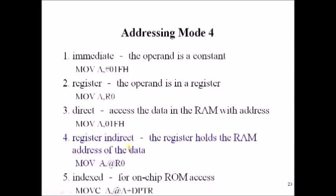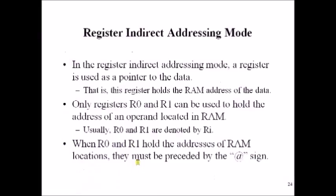Now let us see register indirect addressing mode. In this case, the address of the operand is stored inside a register, and that register is given as a source operand with the @ symbol. When the @ symbol is placed in front of a register, the assembler treats the value inside the register as an address. Only registers R0 and R1 can be used to hold the address of an operand in RAM, and both must be preceded with the @ symbol.